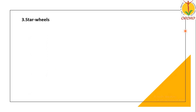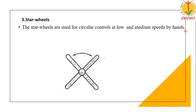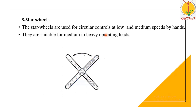Next one is a star wheel. Star wheels are used for circular controls at low and medium speeds by hands. They are suitable for medium to heavy duty loads or medium to heavy duty applications.